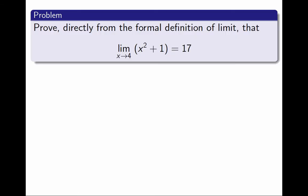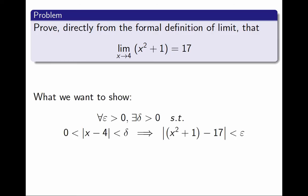Here is the problem. I want to prove that the limit as x approaches 4 of x² plus 1 is 17, and I want to do it directly from the definition of limit. So, let's recall the definition of limit. What I need to show is that for every ε positive, there exists a δ positive, such that if the distance between x and 4 is between 0 and δ, then the distance between x² plus 1 and 17 is smaller than ε.